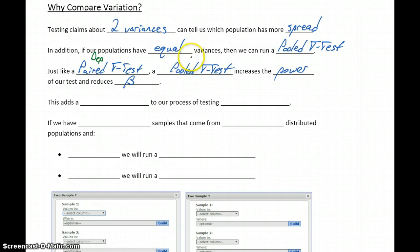In the case where we have independent samples, not all the time, but in some cases we'll be able to run this pooled test and again increase our power and reduce beta, the probability of a type 2 error.